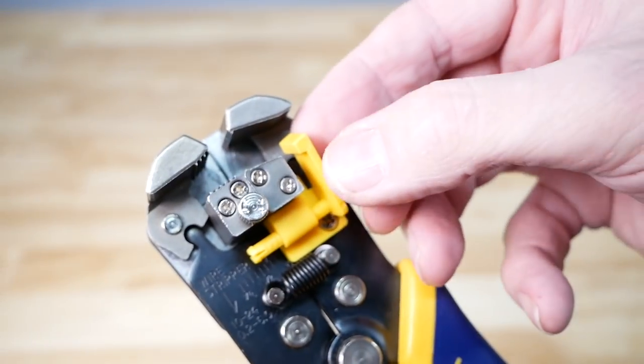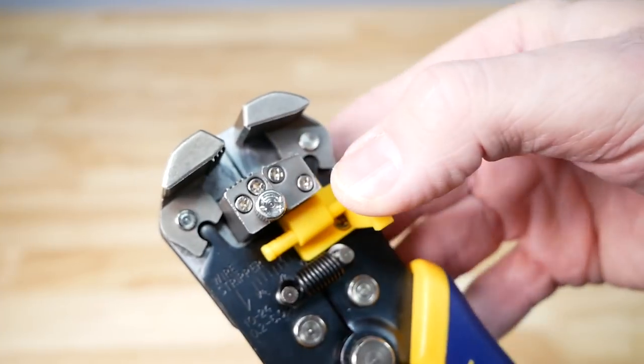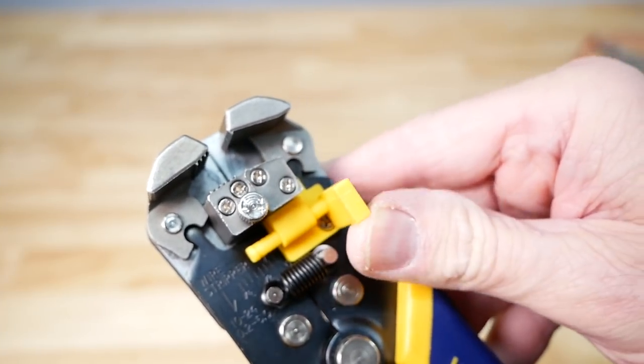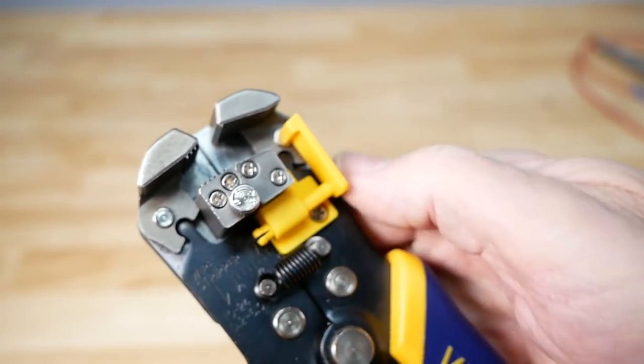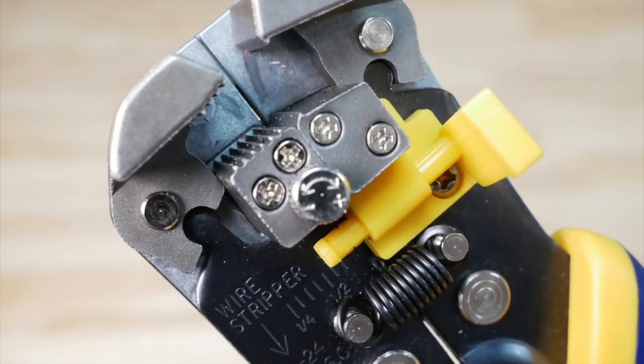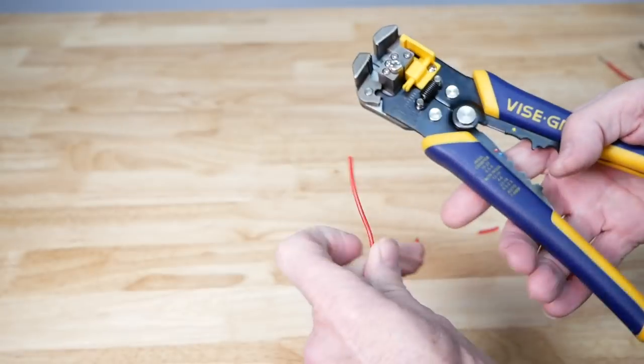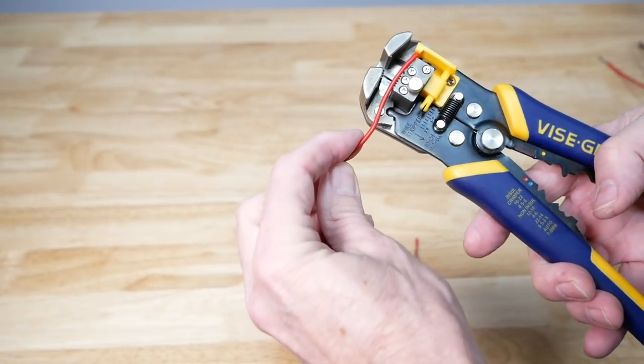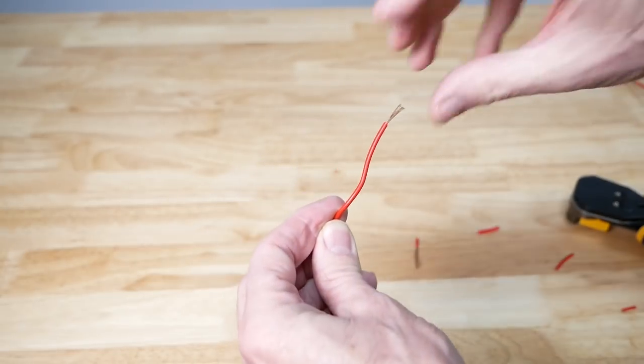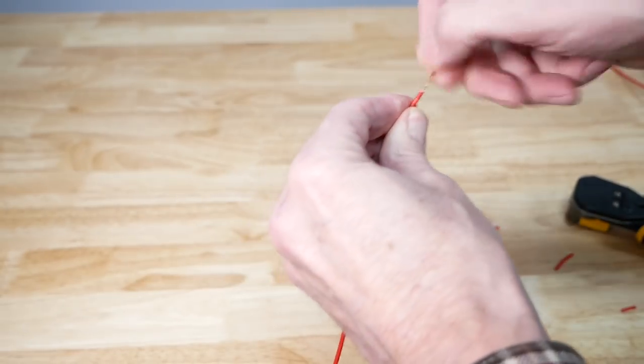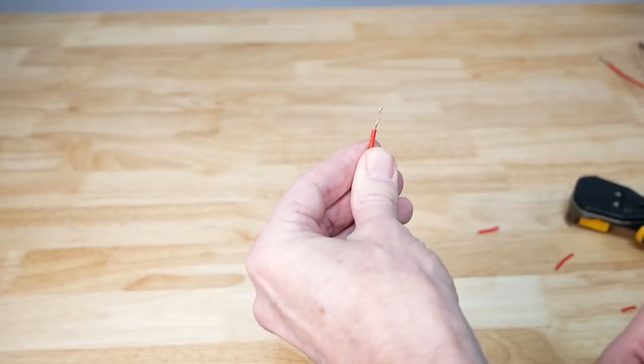Now this little depth gauge will actually allow you to set how much wire you want to trim off. So let's say you want to get a half inch, and you can measure. There's a scale in here where you can measure. Let's say I want to set it to a half inch, so I can now butt the wire up next to that gauge, and I'll get a perfect half inch, and then I'll just twist it off, and we're ready to go.